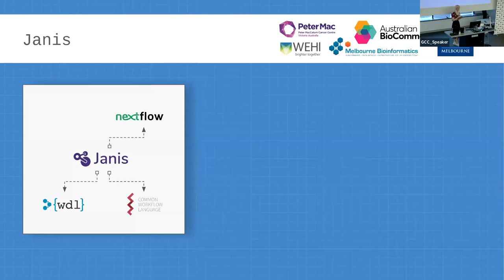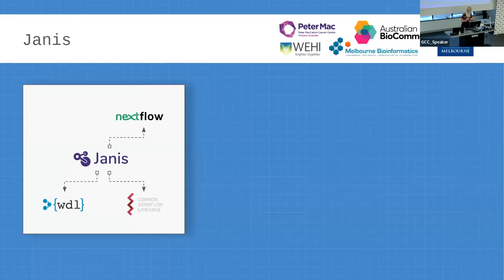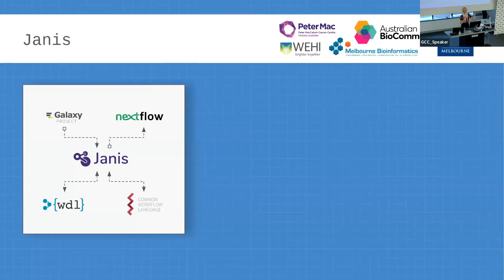If Galaxy had 20 tools, we probably would have written it all manually in Janus. But Galaxy doesn't have 20 tools and doesn't have 20 workflows — it has thousands, literally thousands. So we thought maybe instead of writing these out manually, maybe we could automatically parse the Galaxy tool XML and Galaxy workflows to generate the Janus for us. We created an ingest unit where we could take Galaxy and ingest that into Janus. Currently we've got a few other ingest units, so we can parse tools and workflows from different specs into Janus, which expands that ecosystem.